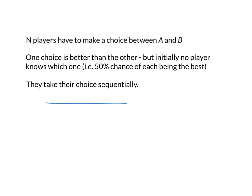Players are going to take their choice sequentially, so we can think of it as if the players are numbered: player 1, then player 2, then player 3, and so on up to player N. Player 1 comes in first and has to choose either A or B, then player 2, then player 3, all the way up to player N. To make it interesting, we're going to have some information provided to the individual players, but we're also going to allow later players to see what choices earlier players have made, but not their private information.